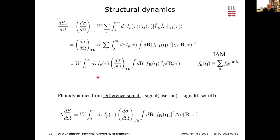In photodynamics, we excite with the laser and measure with the X-ray probe pulse, then take the difference between the excited and unexcited scattering images. The only thing that changes is the distribution of configurations at a given time, so the change in scattering is due to the change in molecular structure as a function of time — and then we can study structural dynamics.